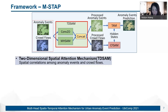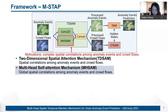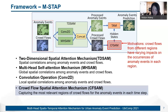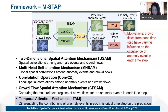More specifically, the two-dimensional spatial attention mechanism is composed of two sub-components: one is a multi-head self-attention mechanism and another is a convolutional operation. We designed the multi-head self-attention mechanism to evaluate the pairwise spatial correlations of crowd flows and anomaly events among all important regions in each time step. We utilized the traditional convolution operation to capture the local spatial correlations among nearby regions using specific kernel sizes and filters. Then we designed the crowd flow spatial attention mechanism to capture the correlations between anomaly events and crowd flows in each time step, as crowd flows from different regions have a wide impact on anomaly event occurrences. Finally, to differentiate the impact of crowd flows at different time steps, we proposed the temporal attention mechanism.